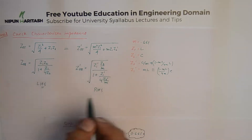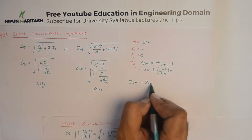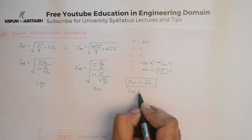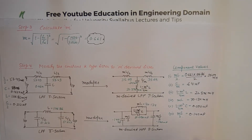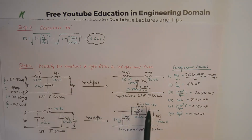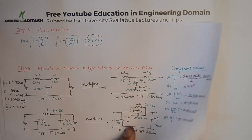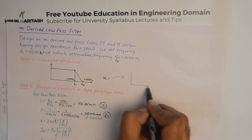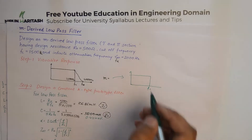If you substitute these values of Z1 and Z2 on the left-hand side equations, and Z1-dash and Z2-dash on the right-hand side, the first condition that should be satisfied is Z0T = Z0T-dash. This is because the characteristic impedance of the filter does not change. Similarly, Z0-pi will equal Z0-pi-dash. This exercise confirms that even after adding components in the m-derived filter, the characteristic impedance remains unchanged, though the frequency response improves significantly.